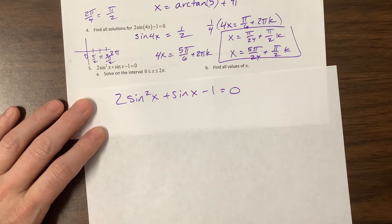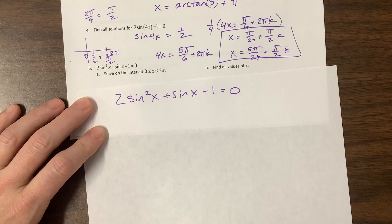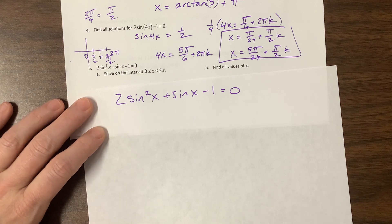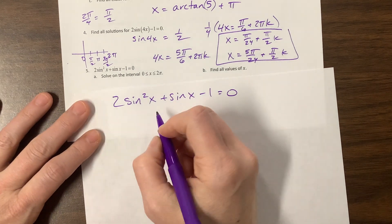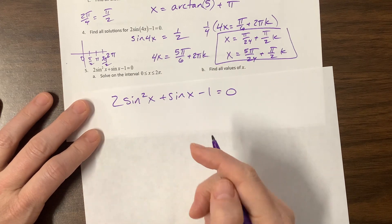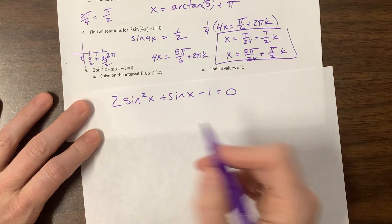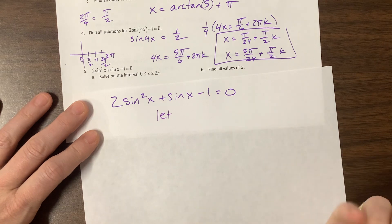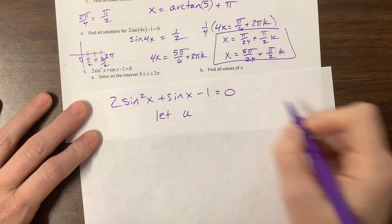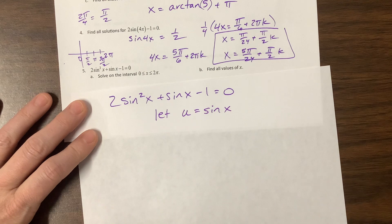I want to solve this. If you don't know what to do at all, we can always do a u-substitution. Not a 'me' substitution, but a 'u' substitution. That's still funny 24 years in. So let u equal sine of x.